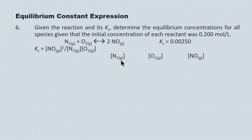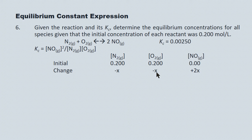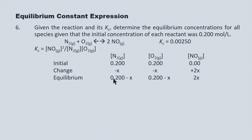Setting up the ICE table: both reactants start at 0.200 mol/L and nitrogen monoxide starts at zero. For the change row, N2 disappears at negative x, O2 disappears at negative x, and NO appears at plus 2x. Equilibrium concentrations are therefore 0.200 minus x for N2 and O2, and 2x for NO.